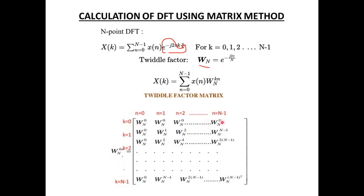For the first row, k=0, so all elements are Wn^0. For k=1 and n=0, you get Wn^0. For k=1 and n=1, you get Wn^1. For k=1 and n=2, you get Wn^2. The last element for k=1 and n=N−1 is Wn^(N−1). In the same manner, you can proceed on till k=N−1.